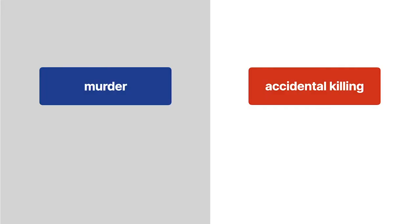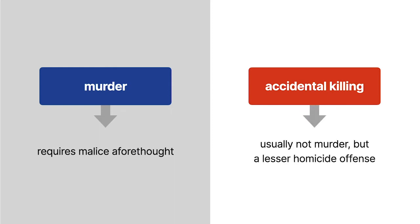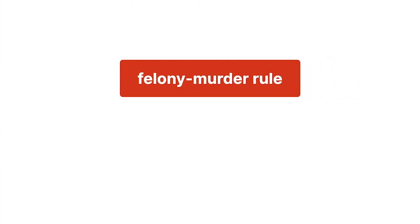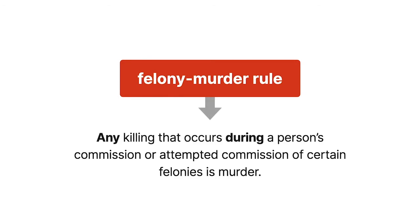Because murder requires malice aforethought, an accidental killing doesn't usually result in murder liability. Instead, the guilty party generally faces liability for a lesser homicide offense. But most states have a felony murder rule under which any killing that occurs during a person's commission or attempted commission of certain felonies is murder,